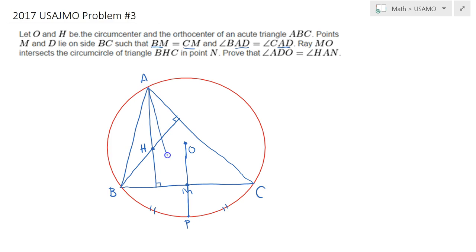So drawing this line, the point D is here where line segment BC and the angle bisector meet. This area is a little messy, so just to clarify: M is the midpoint of BC. Finally, we are told to draw the circumcircle of BHC.